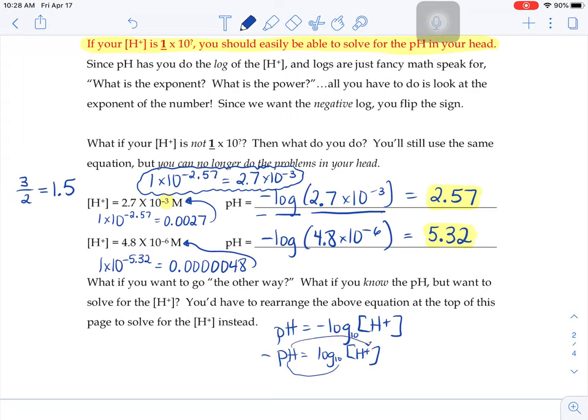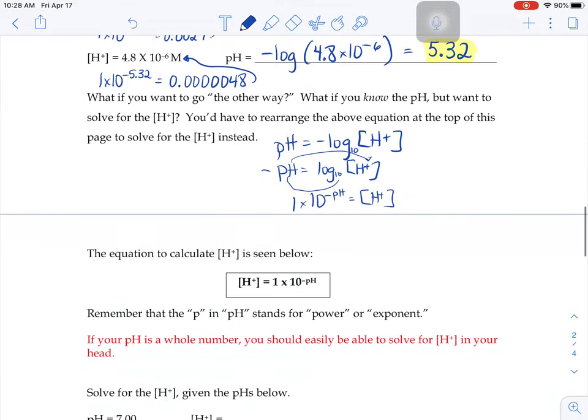10 to the negative pH is going to equal your H+. And usually when we write concentrations, we don't just do 10 times 10 to the negative pH, but we do 1 times 10 to the something. So that's where you see our other equation here. H+ is going to equal 1 times 10 to the negative pH.